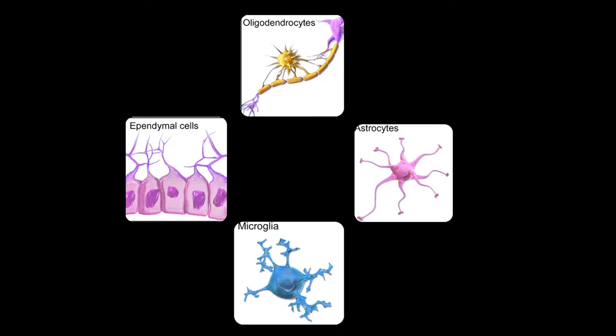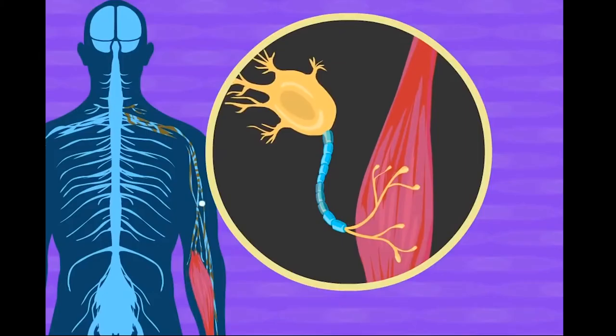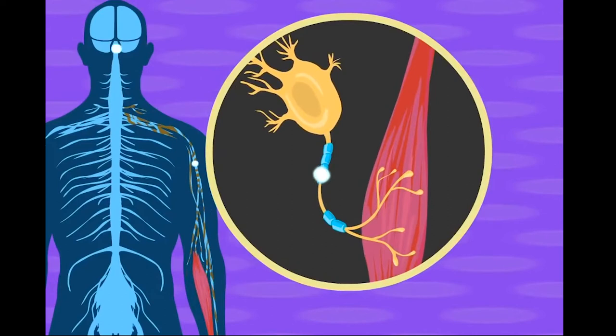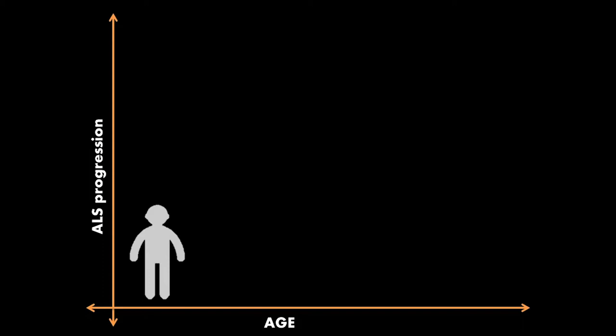The involvement of glial cells in ALS has also been established in the past few years. The death of motor neurons causes atrophy of muscles, starting from muscle fatigue to muscle weakness. ALS is characterized by gradual paralysis of the whole body. This disorder prohibits the ability to speak, walk, move, swallow, and ultimately breathe.